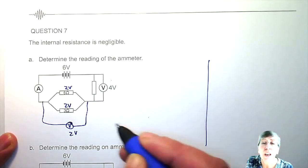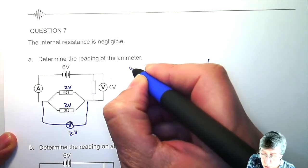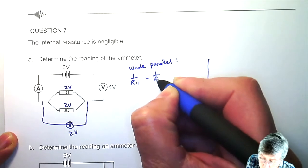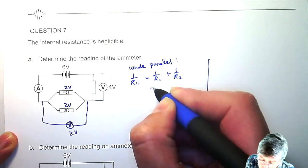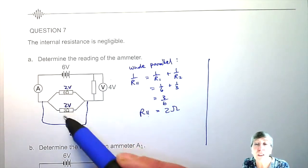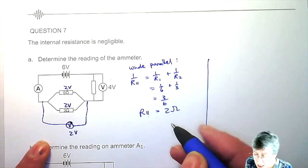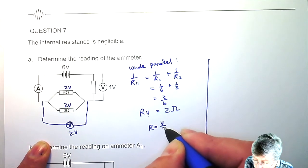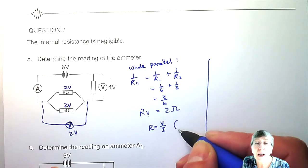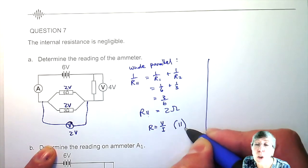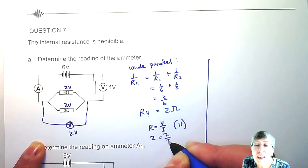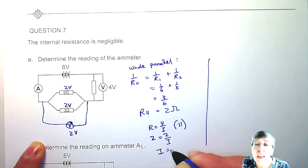Now I can do one of two things. I can either work with the whole parallel: 1 over R-parallel equals 1 over R1 plus 1 over R2. First work out the total resistance of the two together, then use Ohm's law — and I always like to write on the right-hand side which part I'm working with. For the whole parallel, the voltage is 2 and the resistance is 2, which tells me the current will be 1 ampere.